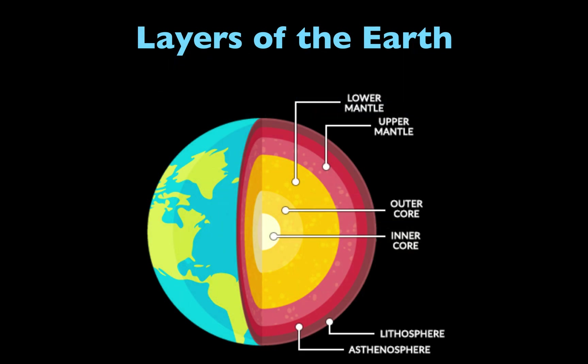What you might not have realized is beneath the surface that we walk on, Earth is made up of different layers. It's really hard for us to imagine this because humans, and not even machines, can get past the outermost layer, which is called the crust. But there's so much to Earth's interior that we need to learn about.